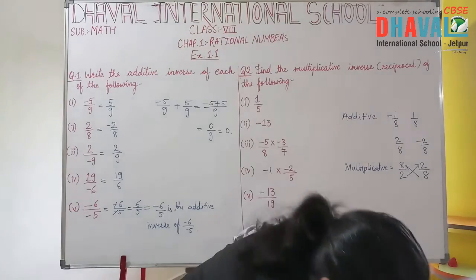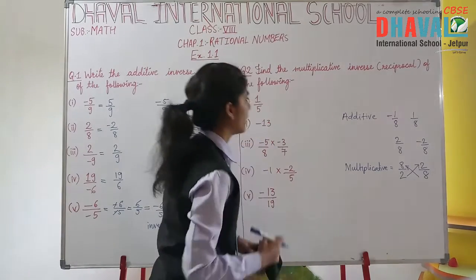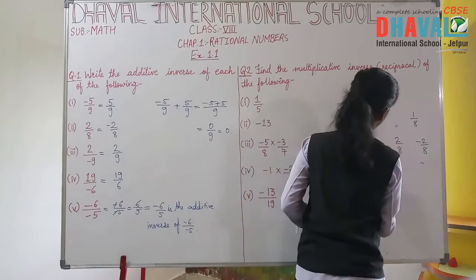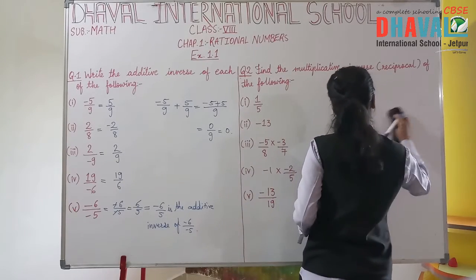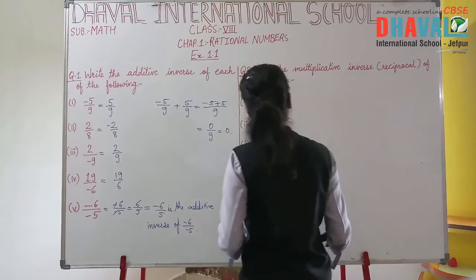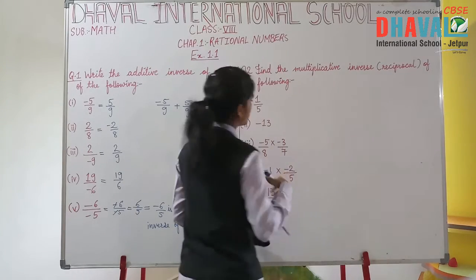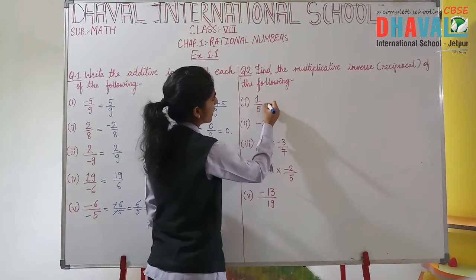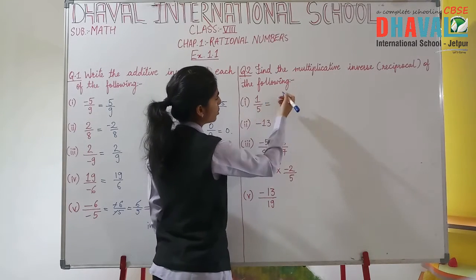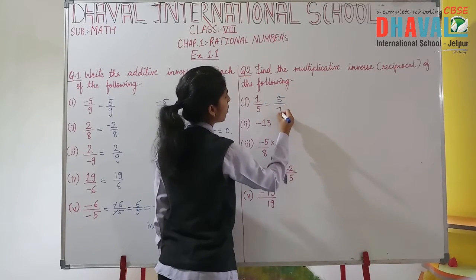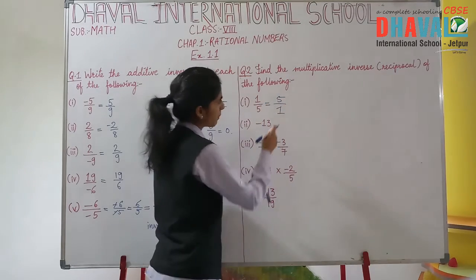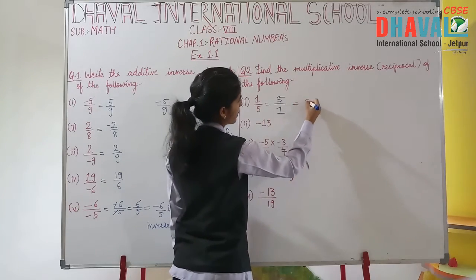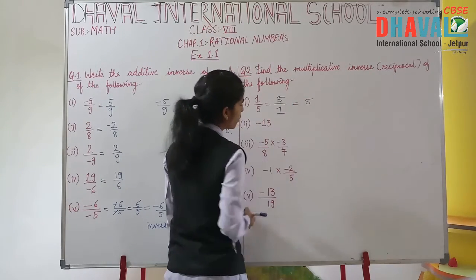The next is the multiplicative inverse. You just need to alter — that is, flip — the numbers. If it is 1 upon 5, then its multiplicative inverse will be 5 upon 1. Now, if the denominator is 1, we simply write the numerator as a whole number, so 5 upon 1 becomes just 5.